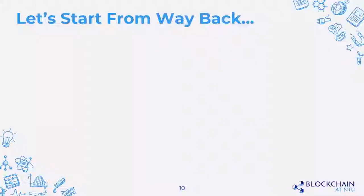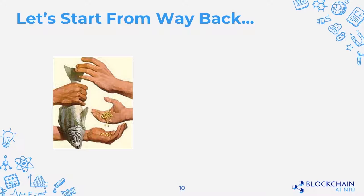Let's start from motivation, going way back to when our ancient ancestors wanted to trade. If you're a farmer with rice and I'm a fisherman with fish, a trade happens naturally. But as population and economy grew, a coordination problem emerged: sometimes I have fish but you don't have rice, or vice versa. When markets grow and everyone needs different pieces of the puzzle, a perfect match becomes almost impossible.